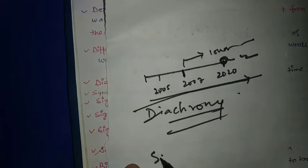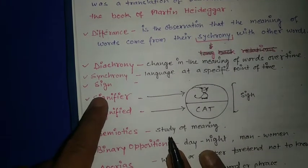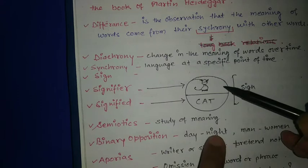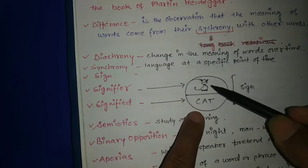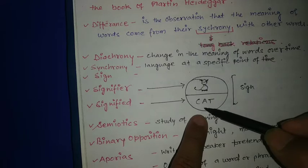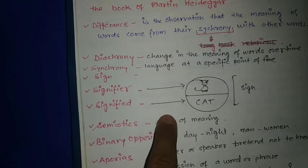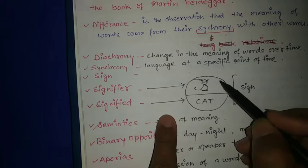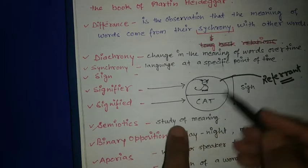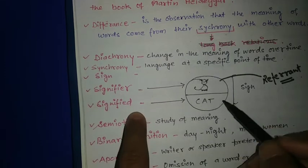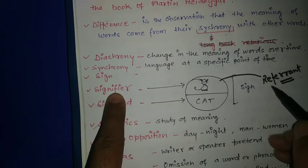He gave a concept of sign and made two parts: signified and signifier. You can see the structure here - you have a picture of cat and here you have the word cat. This is text, and signifier is what it represents. The actual cat is also called referent. The picture of cat is signifier, and the text 'cat' is signified.